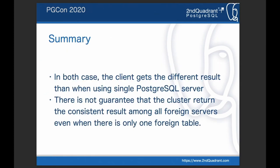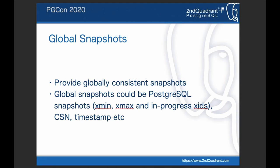I've described how clients get different results than when using a single PostgreSQL server. There is no guarantee that the cluster returns consistent results across all foreign servers, even when there is only one foreign table. To provide consistent read results, each node needs to see its own data with a globally consistent snapshot. The snapshot could be anything — currently PostgreSQL uses the state of transaction IDs (XIDs) as a snapshot, but commit sequence numbers or timestamps can also serve as snapshots in principle, although current PostgreSQL doesn't support them. The key point is that all participants must use a globally consistent snapshot to see the data.